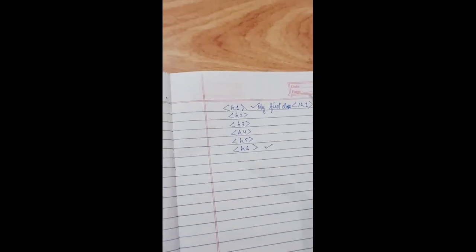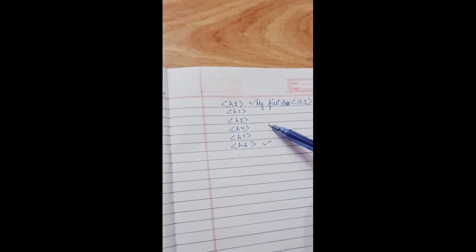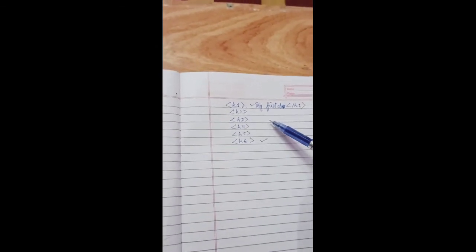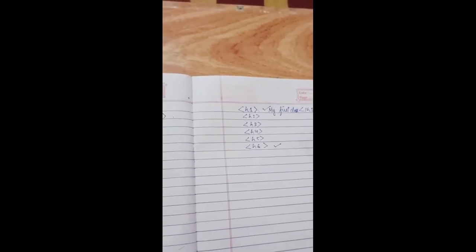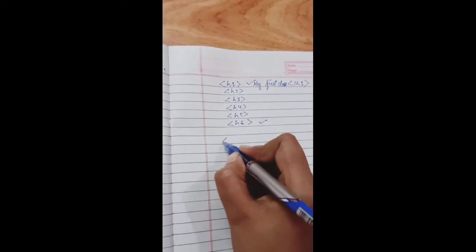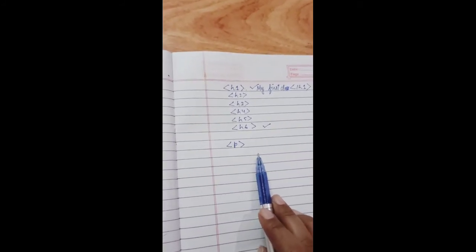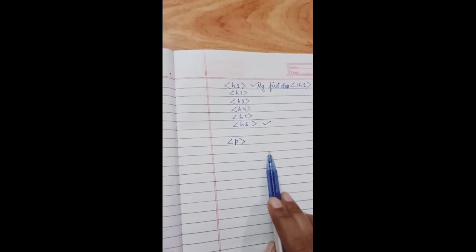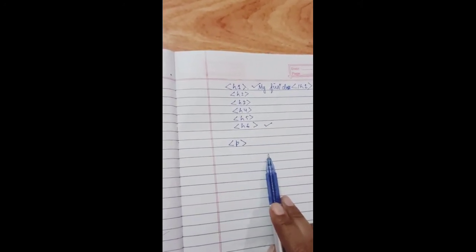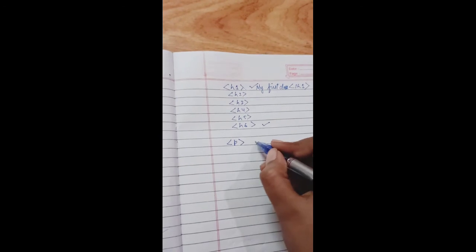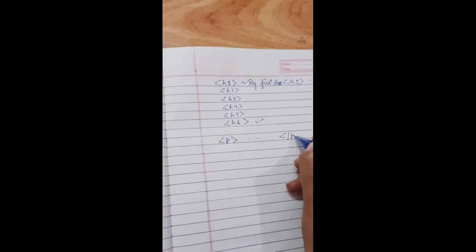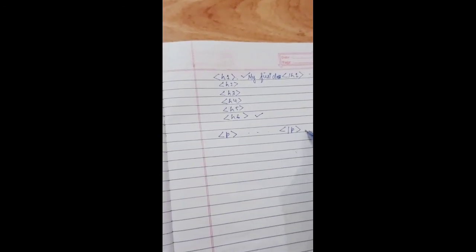Next is paragraph. The paragraph tag, it is written as small P. It is used to define the start and end of a paragraph in the text. It is a container tag starting with P and ending with backslash P. It is also a container tag.